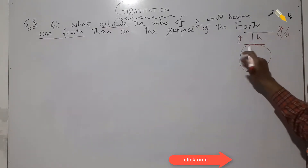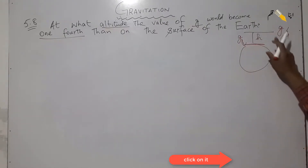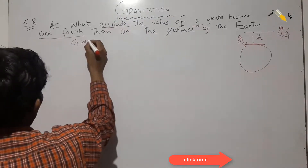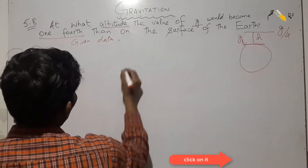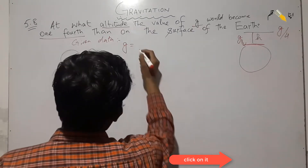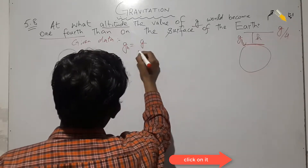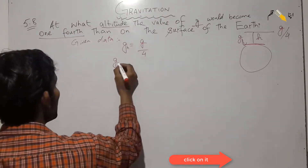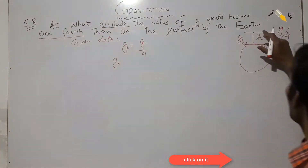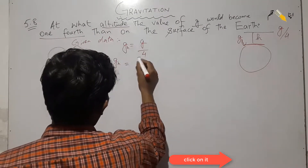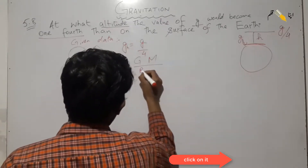This means the g value at height h, which we call g_h, equals g divided by 4. This is our given data. The formula for gravitational acceleration at altitude h is: g_h = GM over (r + h) squared.